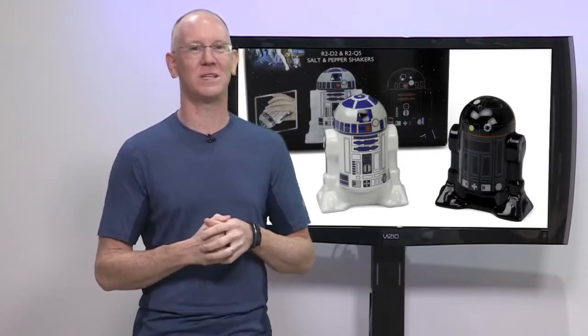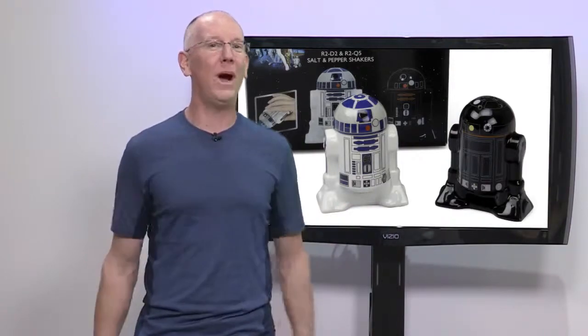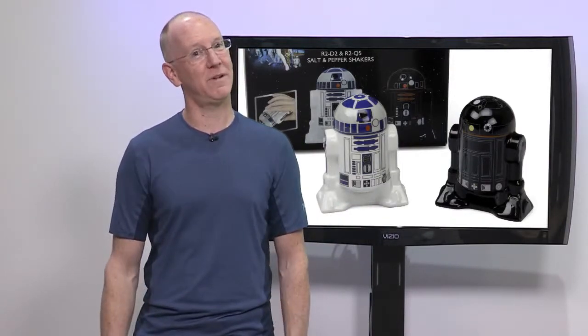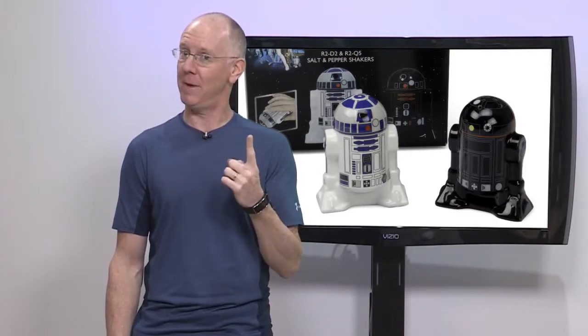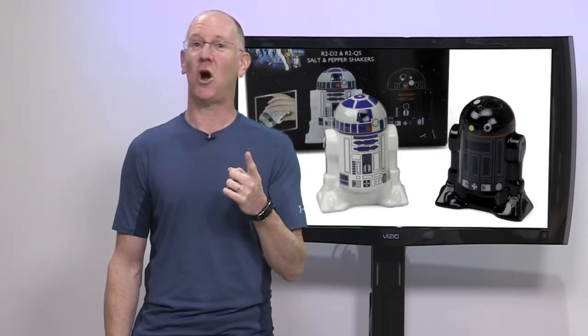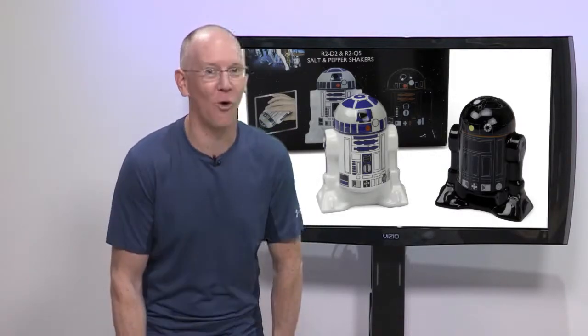For adults, let's head over to the kitchen. Sorry about the mess. Where you can add a little Star Wars with every meal starting with a set of droid salt and pepper shakers for just under 30 bucks. The white salt shaker is easy to identify as R2-D2, but what about the black pepper mill? Why, that's R2-Q5, of course.